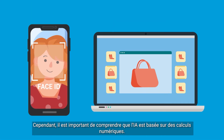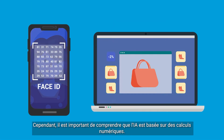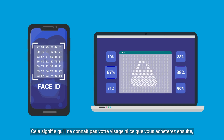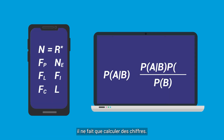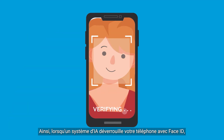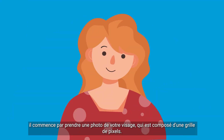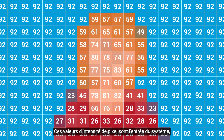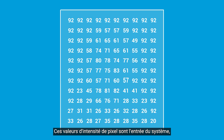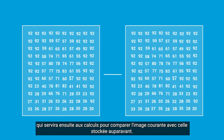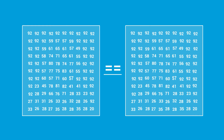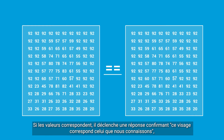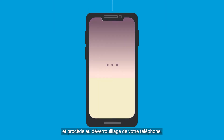It is important to understand that AI is based on numerical calculations. This means that it does not know your face or what you will buy next — it only crunches numbers. So when an AI system unlocks your phone with Face ID, it starts by taking a picture of your face, which is composed of a grid of pixels. These pixel intensity values are the input of the system, which will then be used for calculations to compare the current image with the ones stored before. If the values match up, it triggers a response confirming this face matches the one we know, and proceeds to unlock your phone.